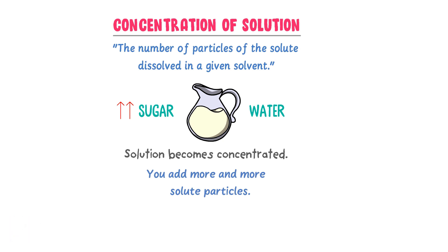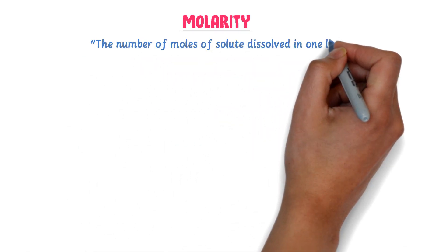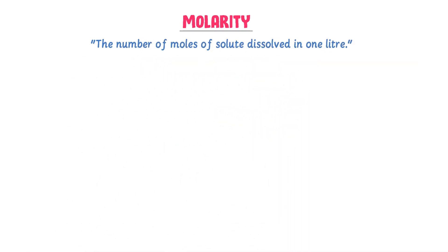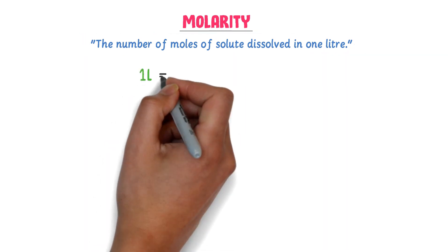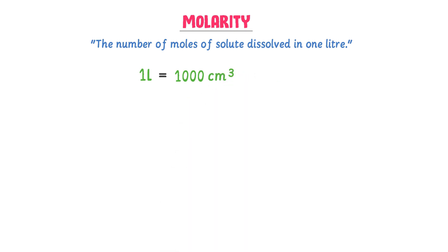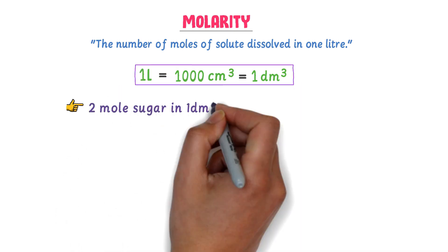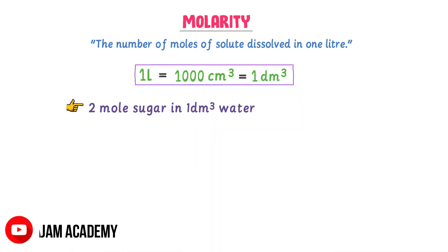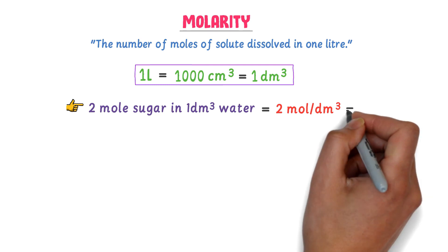Remember that concentration of a solution is expressed in terms of molarity. The number of moles of a solute in one liter of solution is called molarity. Note that one liter is equal to 1000 cm³ or 1 dm³. For example, consider 2 mol of sugar in 1 dm³ of water — the concentration of sugar is 2 mol per dm³, or simply 2 M.